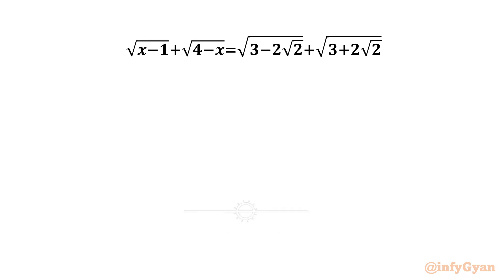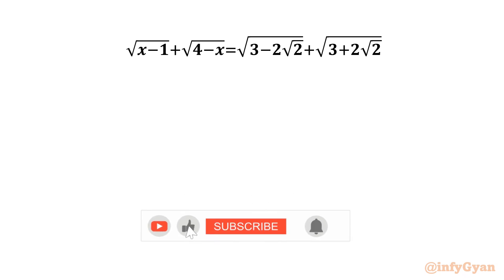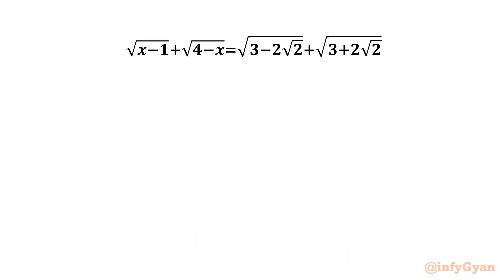Welcome to Infigyan. Today in this video we are going to solve another very interesting question from Math Olympiads. We have: square root of (x minus 1) plus square root of (4 minus x) equals square root of (3 minus 2√2) plus square root of (3 plus 2√2).